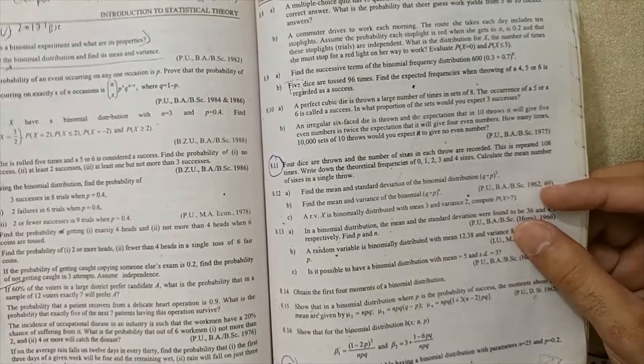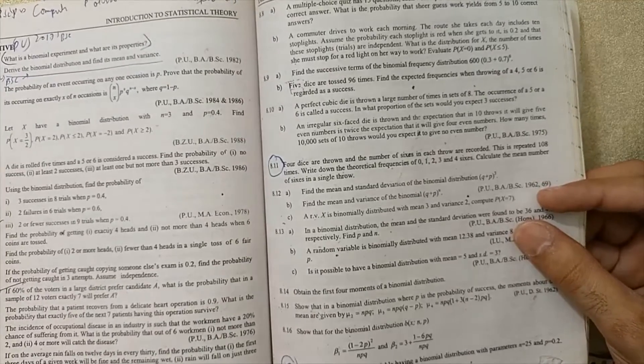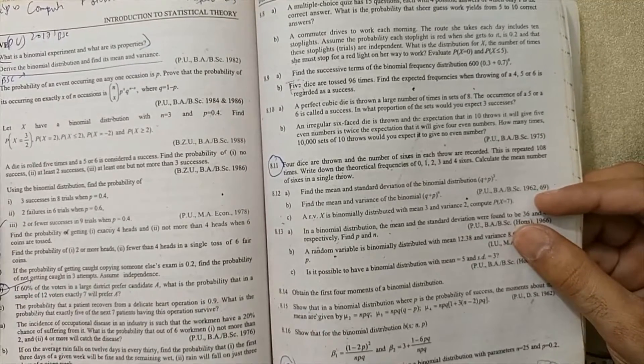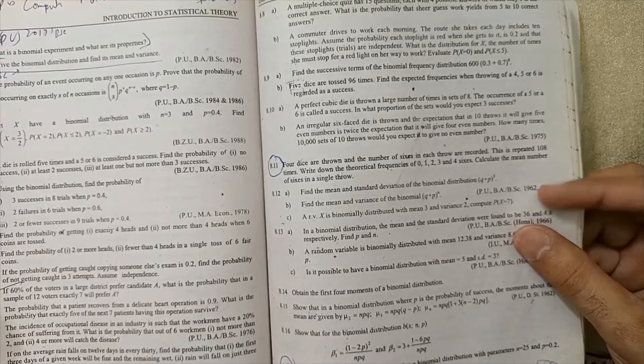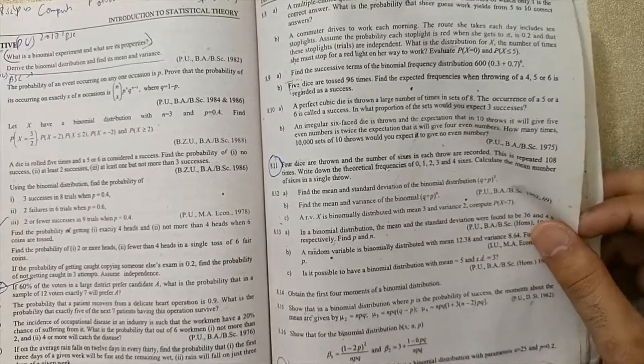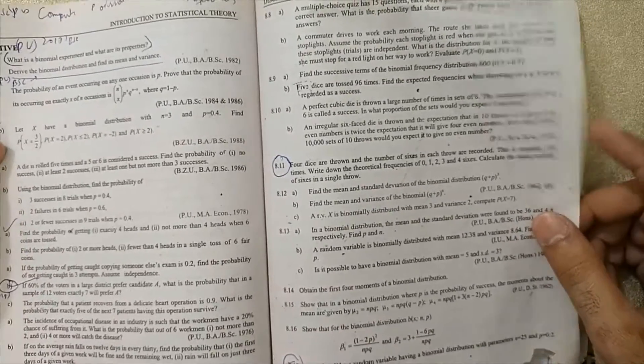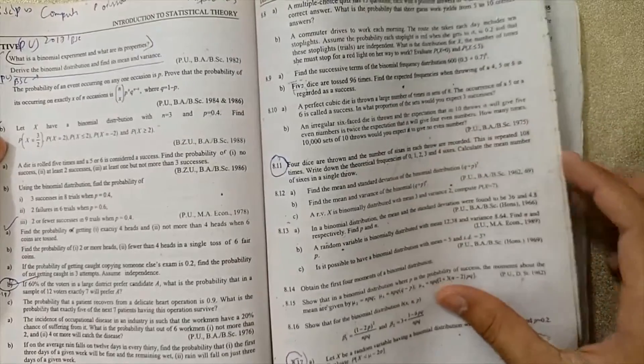Now I'm going to move to the exercises. 8.1 question is very important. 8.2 B part, 8.4, 8.5 B part is very important. Next 8.11, 8.17.